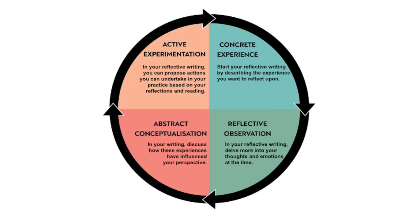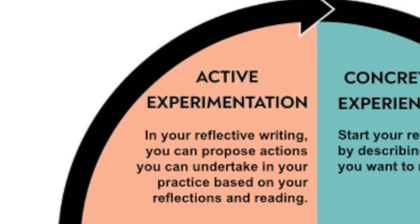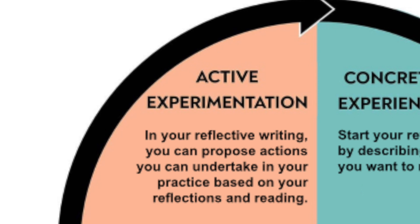Finally, in the active experimentation stage, consider how you can put into action what you've learned to improve your future practice. In your reflective writing, you can propose actions you can undertake in your practice based on your reflections and reading — this is where you translate your insights into practical steps. For instance, you could outline that you will attend workshops on active listening to enhance your skills, and then describe how you would apply this learning to adjust your listening skills to the different circumstances you may come across in the field.